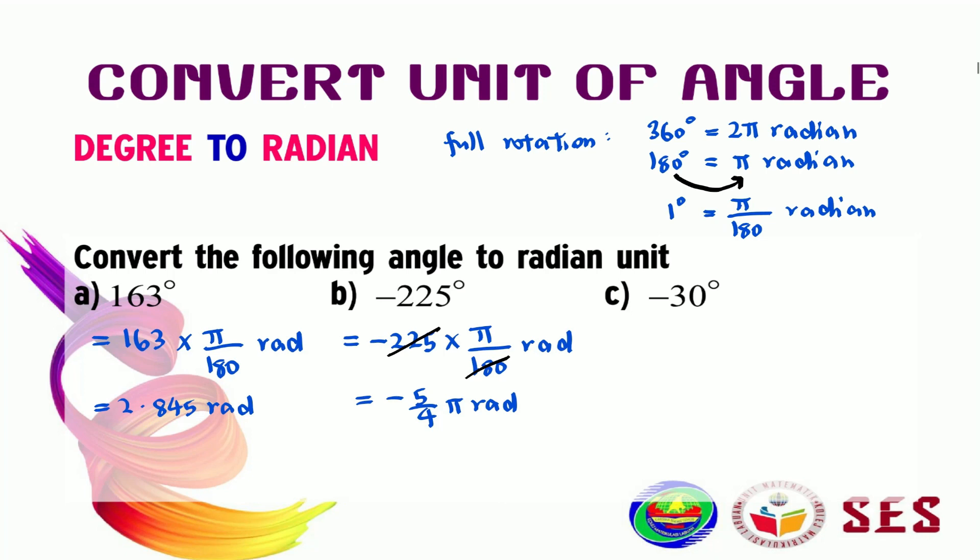You can leave your answer like this, or you can put this in decimal. So, this one will become negative 3.927 radian. I like this one better, but it's up to you.